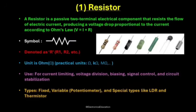Resistors come in several types. The most common is the fixed resistor, which has a constant resistance value. Then comes the variable resistor, such as the potentiometer or rheostat, which allows manual adjustment. Finally, we have special types like the LDR, or light-dependent resistor, which changes resistance based on light, and the thermistor, which varies with temperature. Even though a resistor might look simple, it's one of the most powerful components in electronics, quietly ensuring that every circuit runs smoothly, safely, and efficiently.